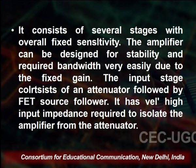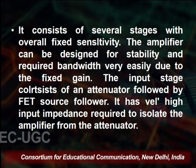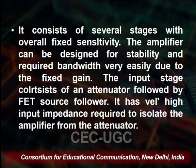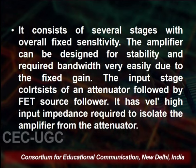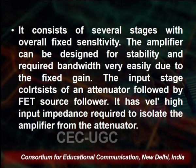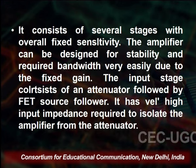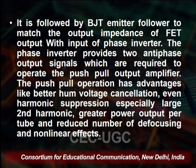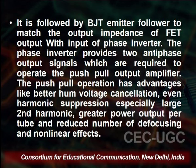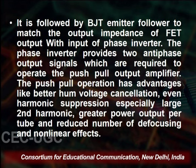It consists of several stages with overall fixed sensitivity, so the amplifier can be designed for stability and the required bandwidth very easily due to the fixed gain. The input stage consists of an attenuator followed by a FET source follower. This amplifier-attenuator arrangement is used to obtain the output signal. It is followed by a BJT emitter follower to match the output impedance of the FET with the input of the phase inverter.